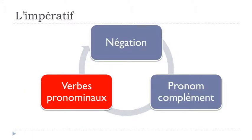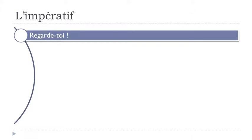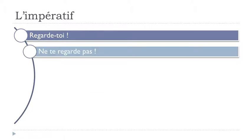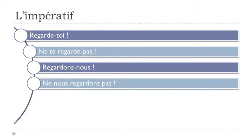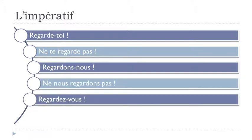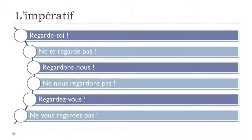Finally, les verbes pronominaux. Using 'se regarder': the affirmative forms are 'Regarde-toi!', 'Regardons-nous!', 'Regardez-vous!' — the reflexive pronoun comes after the verb. In the negative form: 'Ne te regarde pas!', 'Ne nous regardons pas!', 'Ne vous regardez pas!' — toi/nous/vous come before the verb in the negative.